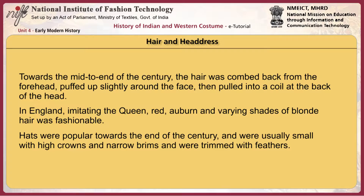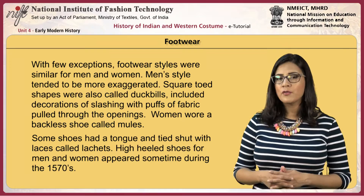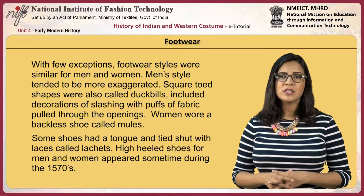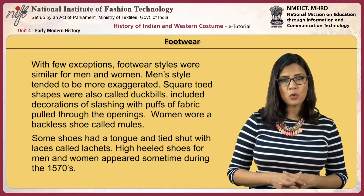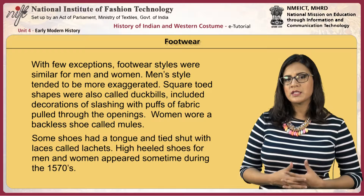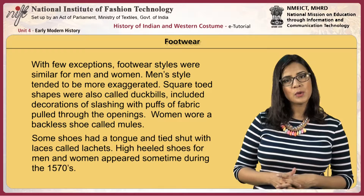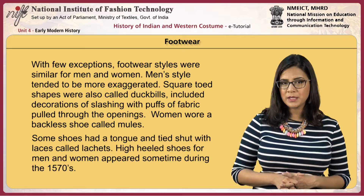With few exceptions, footwear styles were similar for men and women, though men's styles tended to be more exaggerated. Square-toed shapes were also called duckbills, and included decorations of slashings with puffs of fabric pulled through the openings. Women wore a backless shoe called mules. Some shoes had a tongue and tied shut with laces called latchets. High-heeled shoes for men and women appeared sometime during the 1570s. Styles worn only by women included low-cut slippers with a strap across the ankle and chopines with platform soles. Boots were worn outdoors when horse riding.